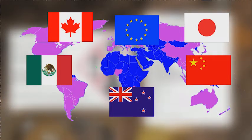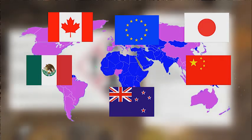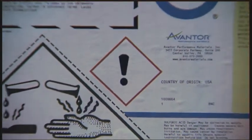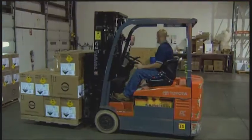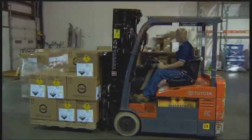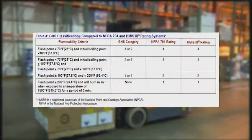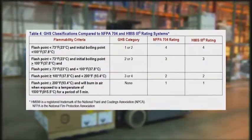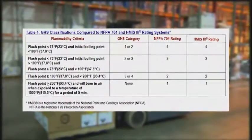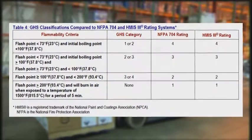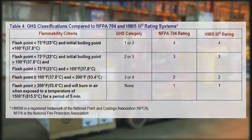GHS reduces trade barriers, making the U.S. more competitive in foreign markets. Conforming to GHS requires modification of other OSHA standards. For example, modifications have been made to standards for flammable and combustible liquids and to most of OSHA's substance-specific health standards.